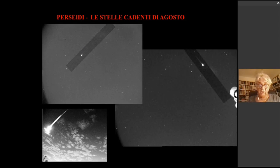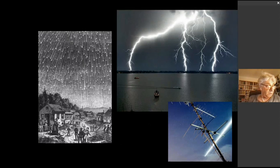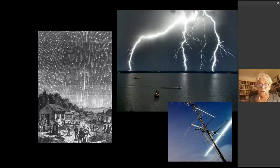Qui vediamo delle immagini filmate dalle nostre telecamere che sono molto esplicative. A volte mostrano anche un'esplosione finale verso la fine del percorso. Le antiche tradizioni popolari interpretavano le stelle cadenti con un significato infausto: erano le lacrime degli dèi disperati per guerre, stragi, morte e di regnanti.